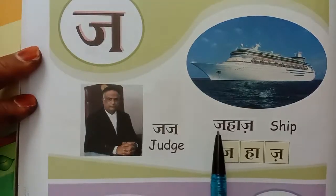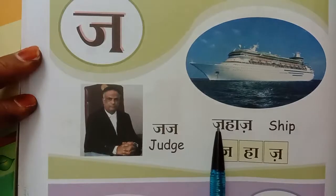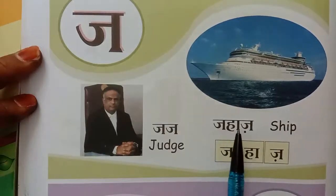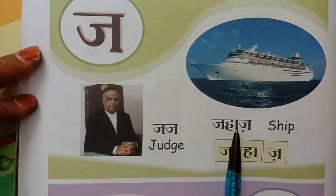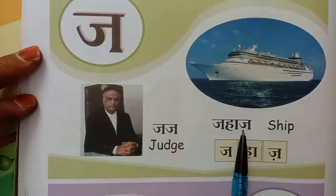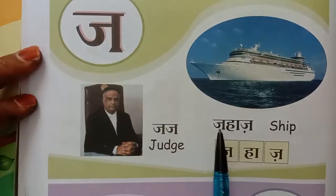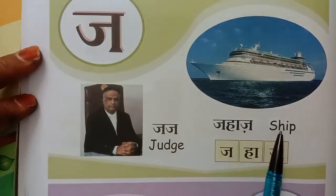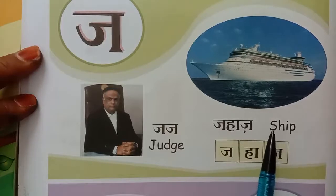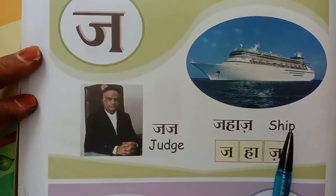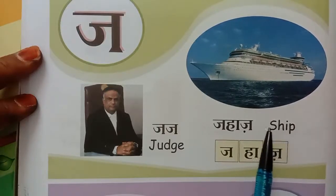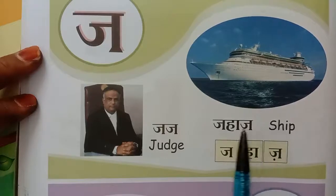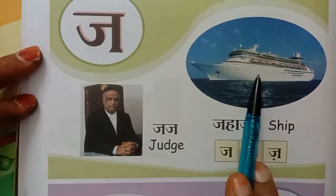Next. JA, HA — ha ki a ki matra. JAHAJ. JAHAJ means SHIP — S-H-I-P. JAHAJ means Ship.